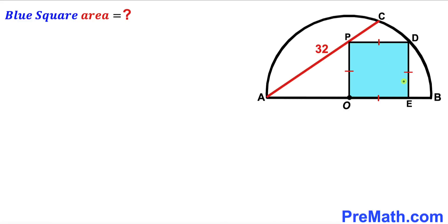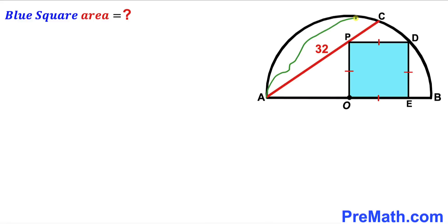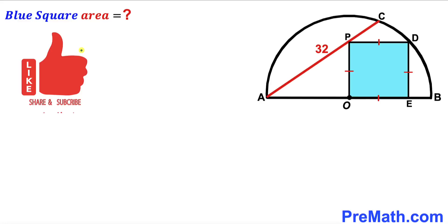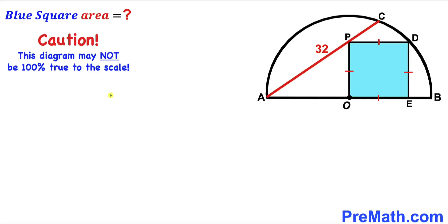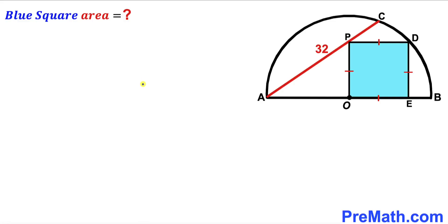Welcome to pre-math. In this video we have a semicircle with center O along with chord AC, such that a blue shaded square OEDP is fully confined between them. The chord AC has a length of 32 units, and our task is to calculate the area of this blue shaded square. Please give a thumbs up and subscribe, and keep in mind that this figure may not be 100% true to scale. Let's get started.